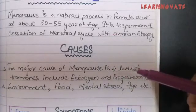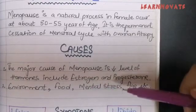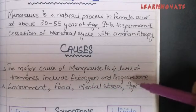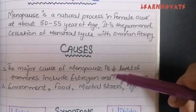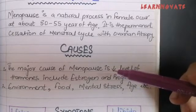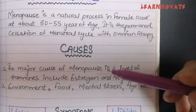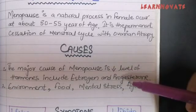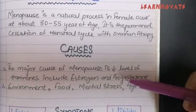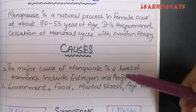The second major cause of menopause includes environment, food, mental stress, and age. If the environment is not suitable, females in those areas may have menopause at earlier ages. Mental stress is also a major contributing factor, as are food and other conditions. But remember, the major cause is the decreased level of estrogen and progesterone.